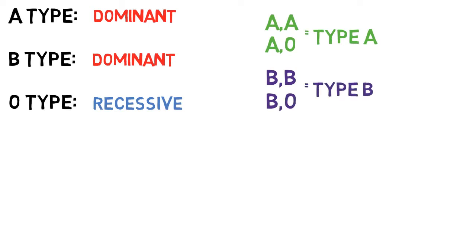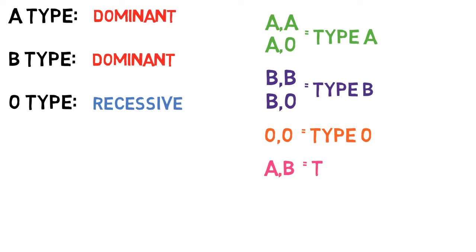It is only if you receive an O from each parent that the O blood type can be established. In the rare case that a child receives an A type from one parent and a B type from another, neither gene is willing to give up its dominance, and the result is that both types remain active, forming the AB blood type.